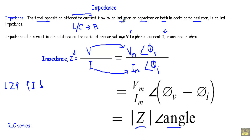So impedance is a complex number that represents the total opposition to current flow by an inductor, capacitor, or both in addition to a resistor. We calculate impedance by taking the ratio of phasor voltage to phasor current. Impedance Z equals (Vm/Im)∠(φV − φI), where Vm/Im indicates the magnitude and φV − φI indicates the angle.